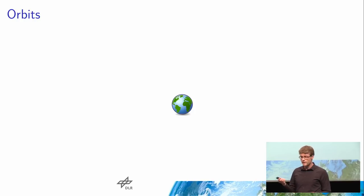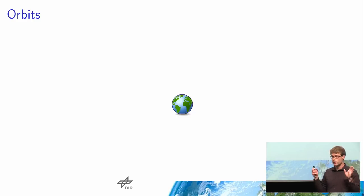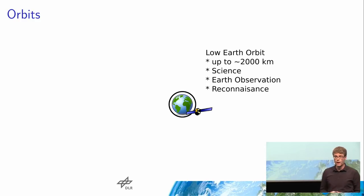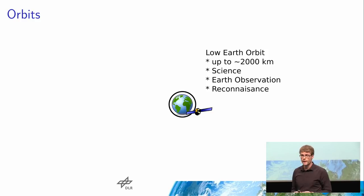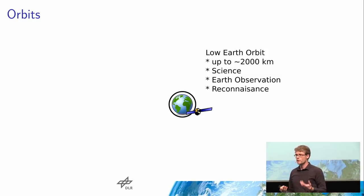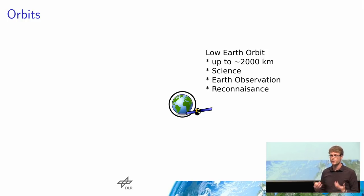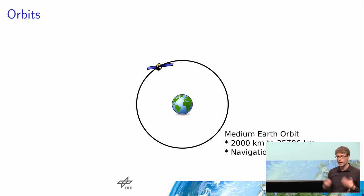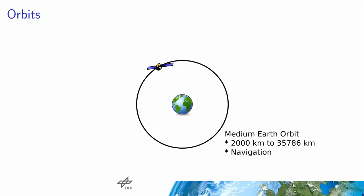Zweitens müssen wir wissen, in welcher Entfernung unser Raumfahrzeug fliegt. Das folgende Bild ist ungefähr maßstabsgetreu. Ein möglicher Ort ist die niedrige Erdumlaufbahn – das ist die Region unter ungefähr 2000 Kilometern. Häufiger sind Höhen zwischen fünf-, sechs-, siebenhundert Kilometern. Hier findet hauptsächlich Wissenschaft statt, insbesondere die Beobachtung der Erde. Dann gibt es die mittlere Erdumlaufbahn – der Kreis ist bei 20.000 Kilometer Höhe, und dieser Höhenbereich wird hauptsächlich für Navigation benutzt, also GPS oder Galileo, die Euro-Version davon.